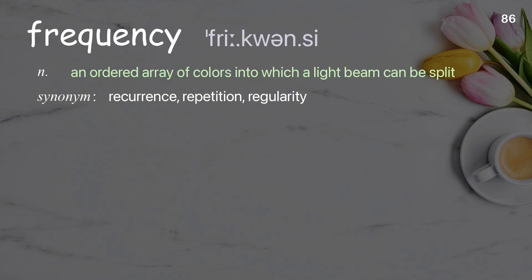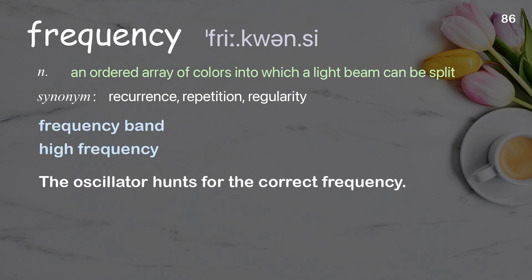Frequency: an ordered array of colors into which a light beam can be split. Examples: frequency band, high frequency. The oscillator hunts for the correct frequency.